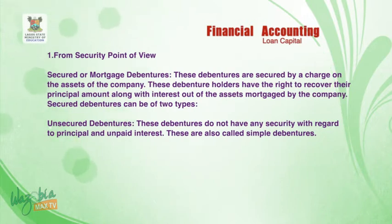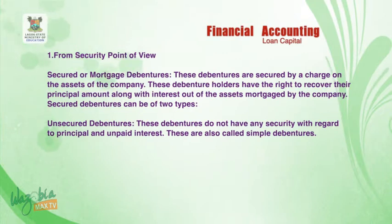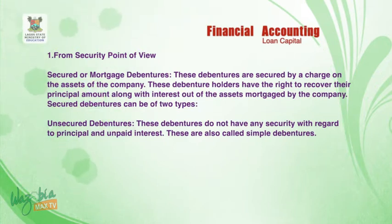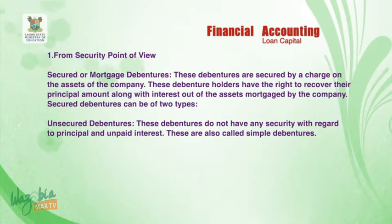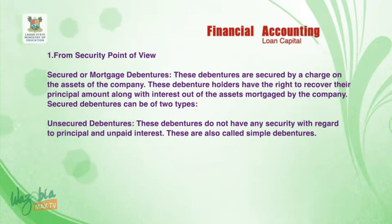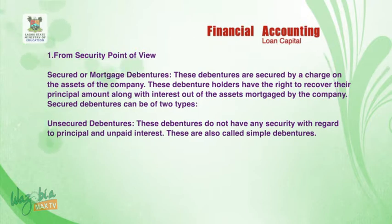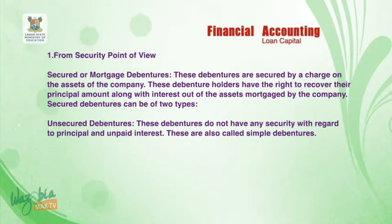Number one — from the security point of view — we have secured or mortgaged debentures and unsecured debentures. Secured or mortgaged debentures are secured by a charge on the assets of the company. These debenture holders have the right to recover their principal amount along with interest out of the assets mortgaged by the company. Unsecured debentures do not have any security with regard to principal and unpaid interest; these are also called simple debentures.